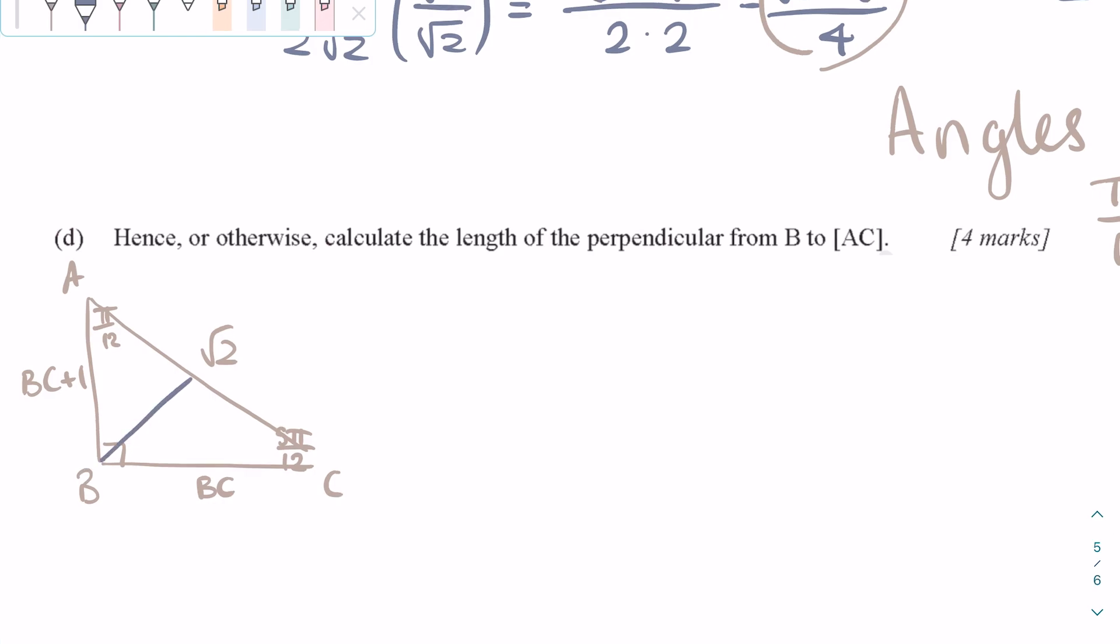A perpendicular means that it is a line that forms a right angle with the line it is intersecting. Now we have two smaller triangles, and we can draw one of these triangles that have A as one of its vertices.